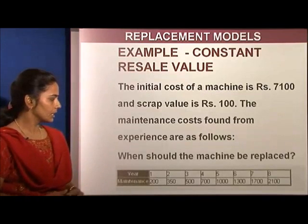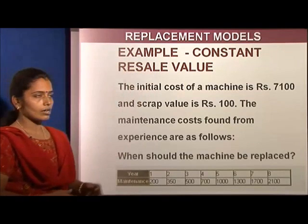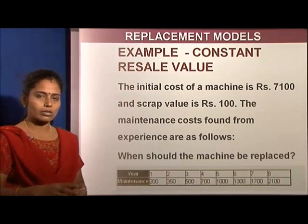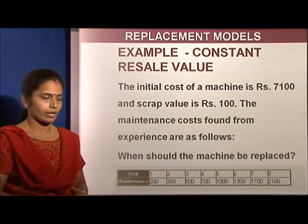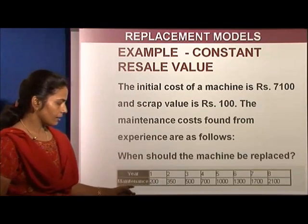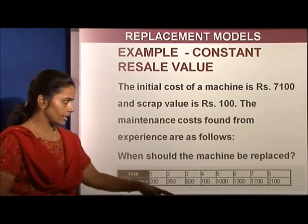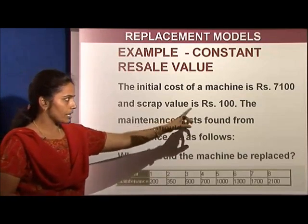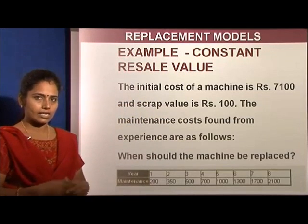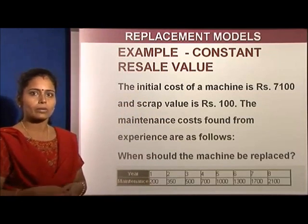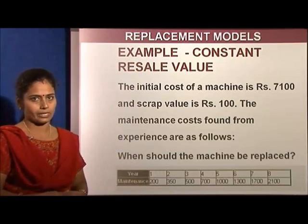Now, given a problem, we are going to understand a model called constant resale value. If a product has a constant resale value, how do we handle the replacement model? The problem spans eight years with varying maintenance cost each year, but the scrap value remains constant at 100. The initial cost of the machine is 7,100 and the scrap value is 100 at any point in time. We need to find at what year replacement gives the optimum solution.